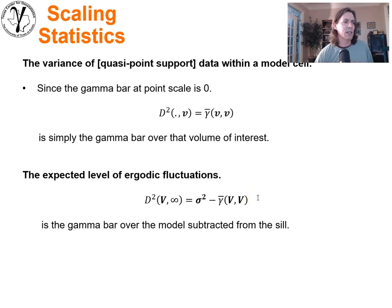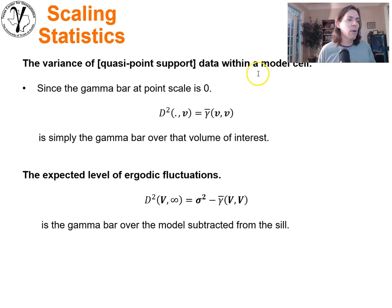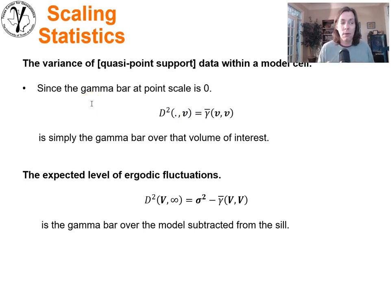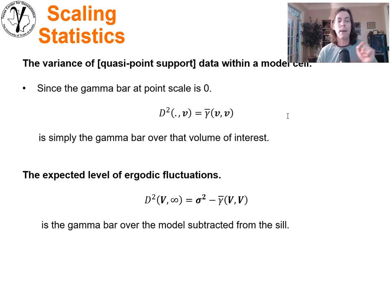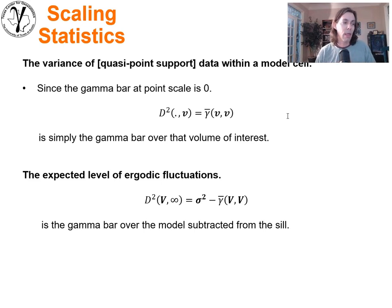The variance of quasi-point support data, or native data support, within a model cell can be calculated as the dispersion variance of the point within volume v. Here v represents the model cell, and that calculation should be gamma bar(v,v) minus gamma bar(point, point). If the data is at a very small quasi-point support scale, the variogram at zero lag offset should be zero — it will be exactly zero. So if you're effectively working at point scale, gamma bar(point, point) goes to zero, and we get the amount of variability within the model cell simply by calculating gamma bar(v,v).